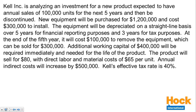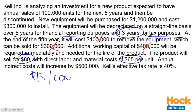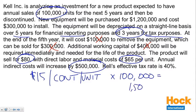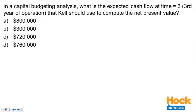For year three, we don't care about the new equipment purchase. It's the three-year tax depreciation that matters — we need the tax depreciation shield. We don't care about the sale or working capital in year three. The product sells for $80 with direct labor and material costs of $65 per unit, giving $15 of contribution per unit. At 100,000 units per year, that's $1,500,000 of additional operating income. Annual indirect costs will increase by $500,000.